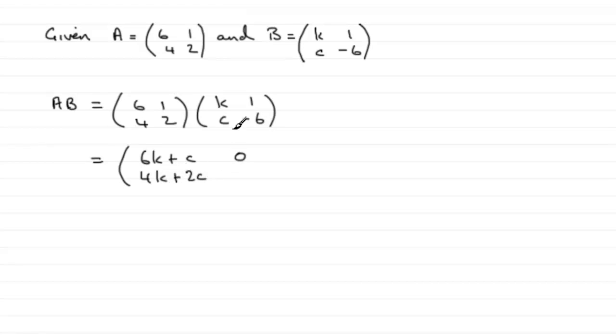And then finally bottom row, second column, so that would be 4 times 1 plus 2 times minus 6, and that gives us minus 8. There you go, AB.